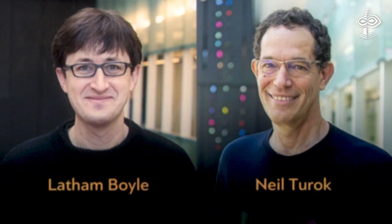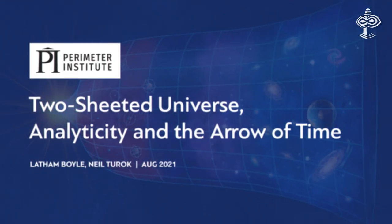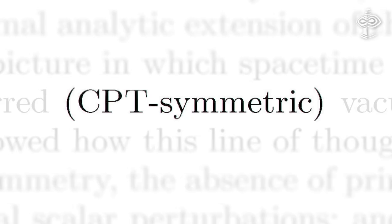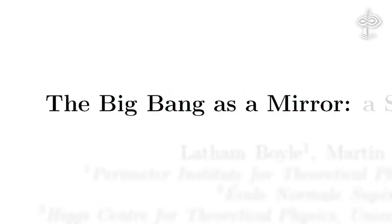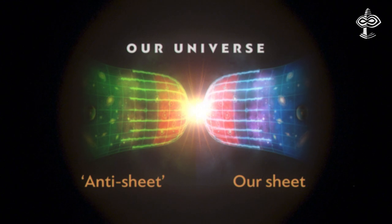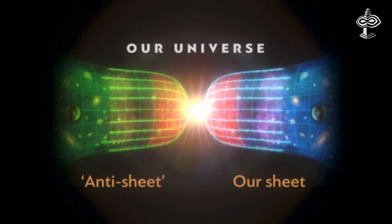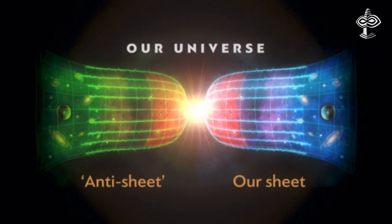Latham Boyle has been working with Neil Turok, his colleague at the Perimeter Institute, on what they call a two-sheeted universe that involves a set of symmetries known as charge, parity, and time. In this hypothesis, the Big Bang is a kind of mirror separating our half of the universe from its mirror antimatter image on the other side of the Big Bang. This model suggests the existence of an anti-universe paired with ours, where time runs backwards.